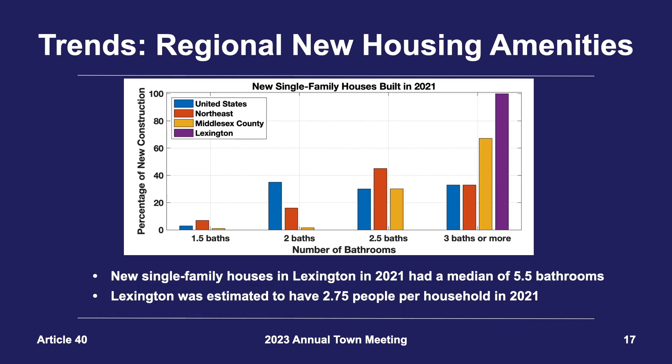We can also look at this trend by examining housing amenities such as the number of bathrooms, and here again Lexington is an outlier. In 2021, the median number of bathrooms in new single-family construction in Lexington was five and a half. When you compare this to the latest demographic data, which estimates the average Lexington household to be comprised of 2.75 people, this is akin to providing two bathrooms per person.